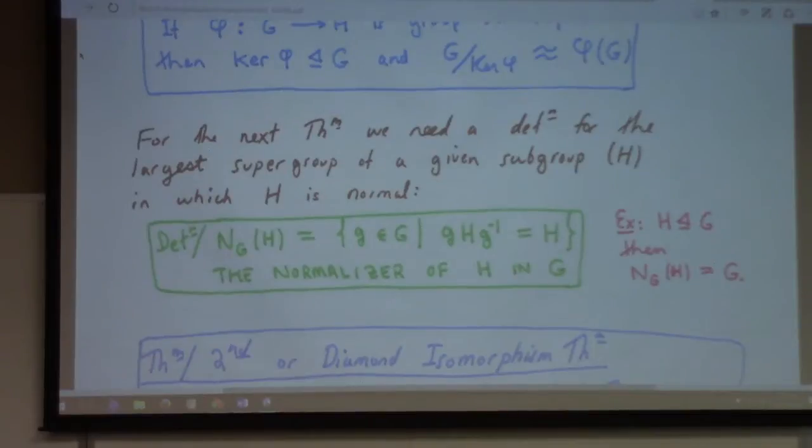So, this is, like, the largest, excuse me, it's, it's basically the, the smallest, supergroup of, of H which normalizes H. A supergroup is a subgroup which contains a given group, all right? So, like, if A is a subgroup of B, that means that B is a supergroup of A. It's just, we don't use that term much, but it's sometimes useful, especially here.